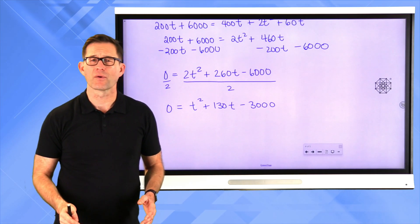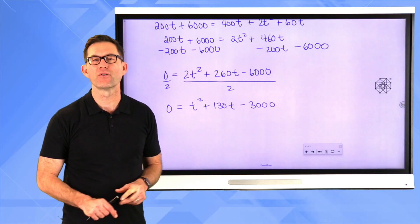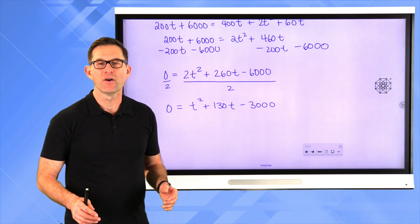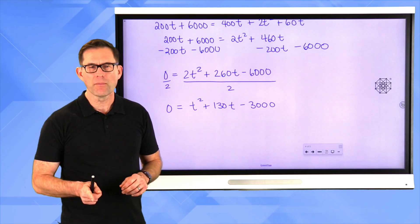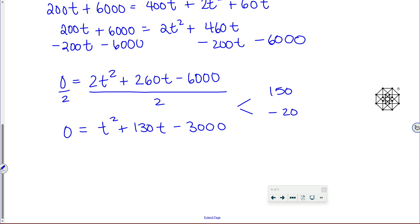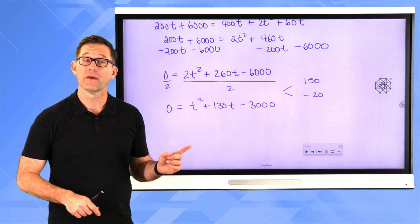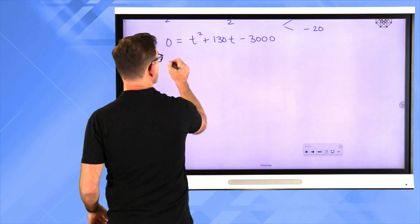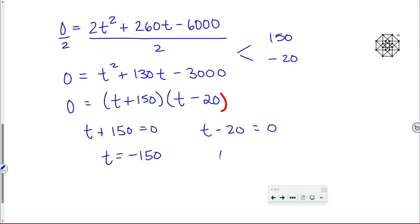We need two numbers with a product of negative 3000 and a sum of positive 130. The numbers are 150 and negative 20, since 150 × 20 = 3000 and 150 + (−20) = 130. So this factors into (t + 150)(t − 20) = 0, giving t = −150 or t = 20.